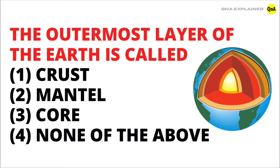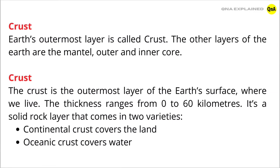The outermost layer of the earth is called: crust, mantle, core, or none of the above? The answer is crust. Crust is the outermost layer of earth.